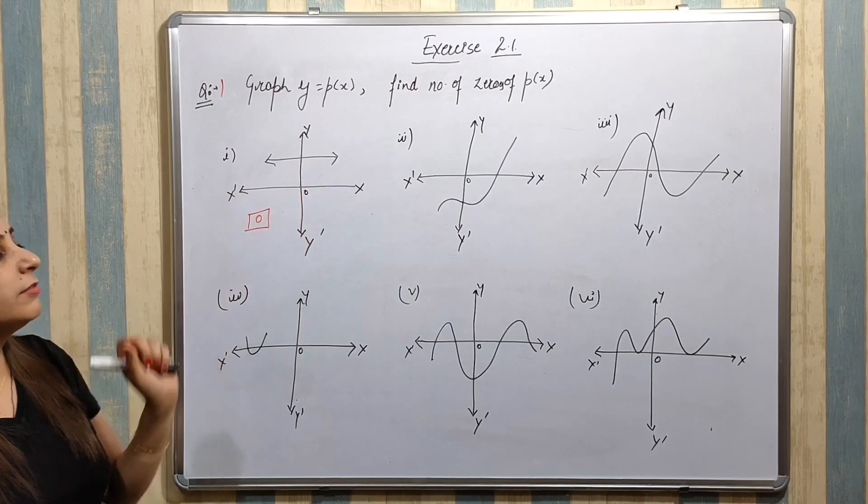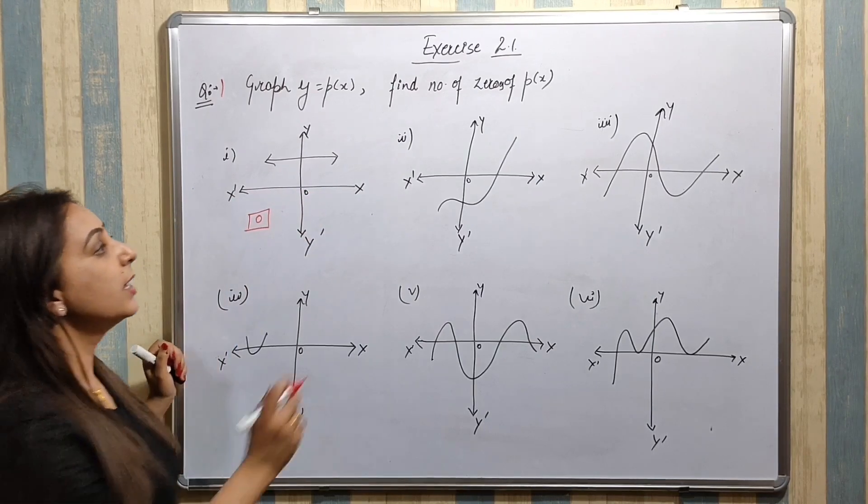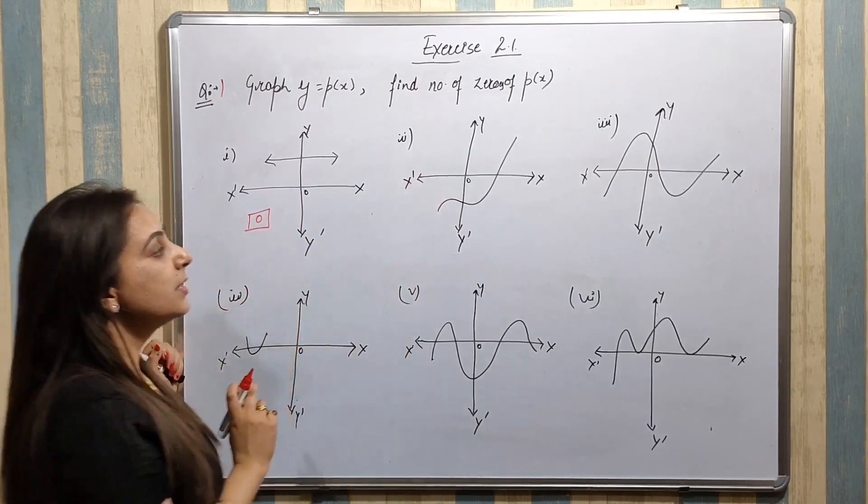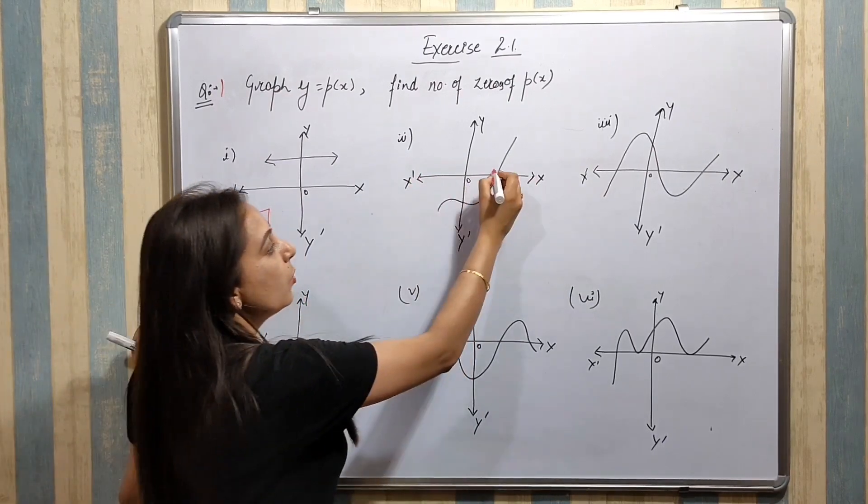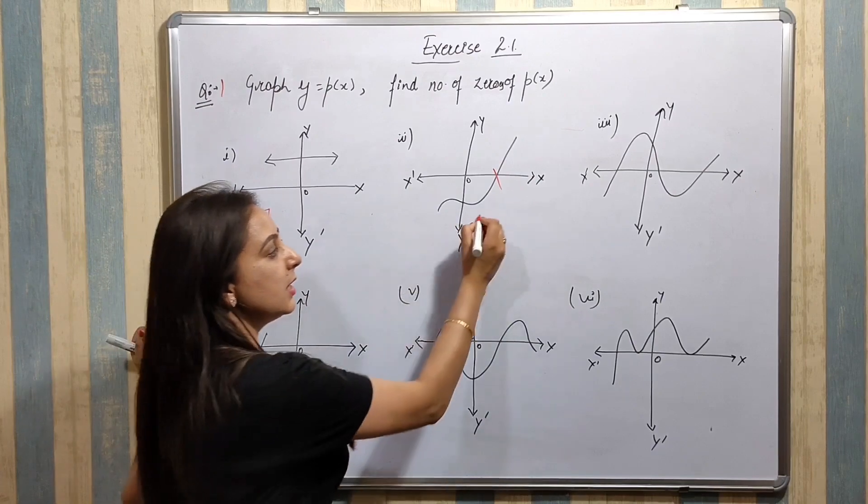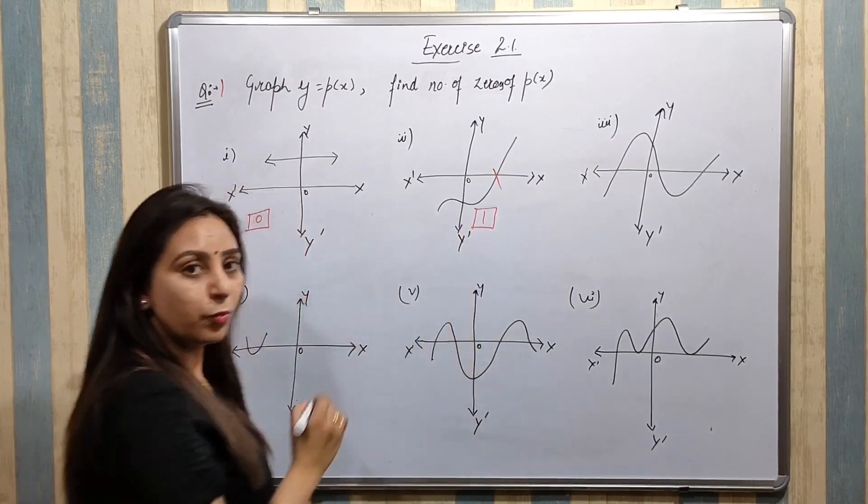Dekho second graph me, x-axis me kitni time intersect kiya hua hai? Only single time, toh ismae kitni nikal jayegi number of zeros? One, right?